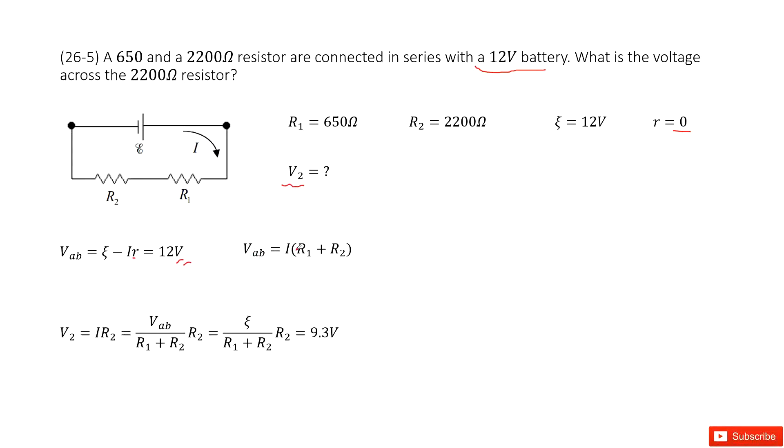And this VAB can be written as the current I times the equivalent resistance for R1 and R2, that is, R1 plus R2.